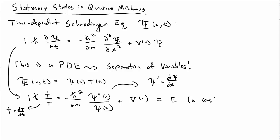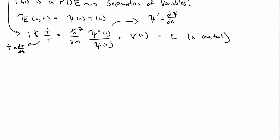In separation of variables we say that these quantities must be equal to a separation constant, and we're going to call that E. That leads to two ordinary differential equations: i ℏ T-dot over T equals E, and minus ℏ² over 2m ψ double-prime over ψ plus V of x equals E.